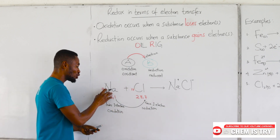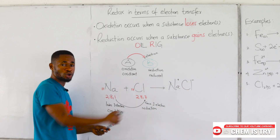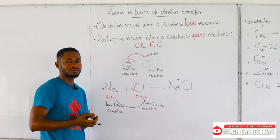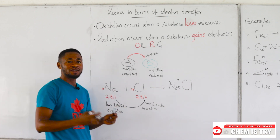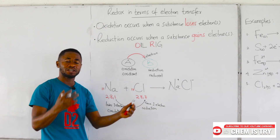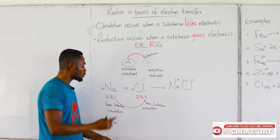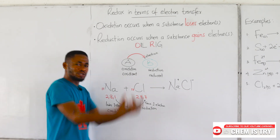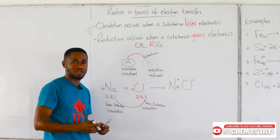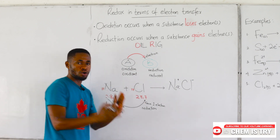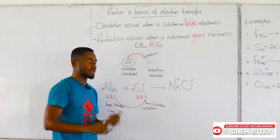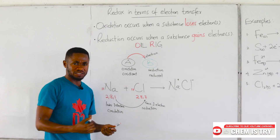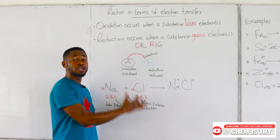All of this happened because sodium transferred one of its electrons — it lost one electron and that electron was gained by chlorine. This is the reason why we say oxidation and reduction occur at the same time: when one substance loses an electron, another substance must be ready to gain that electron simultaneously. We can write equations to represent what is really happening here.